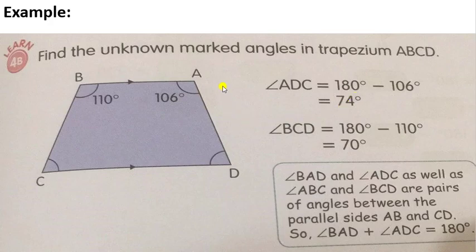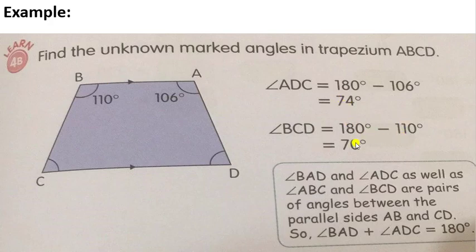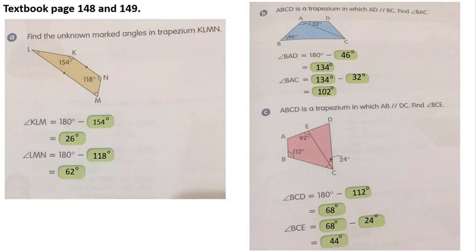Now for angle BCD — the angle at point C — we take 180 degrees minus 110 degrees, and we get the answer 70 degrees.